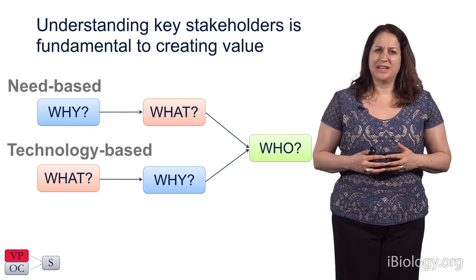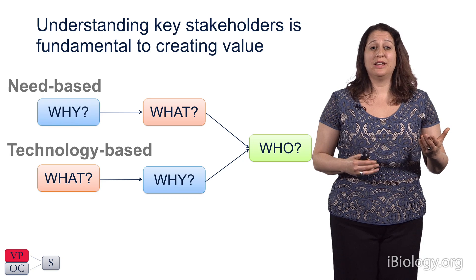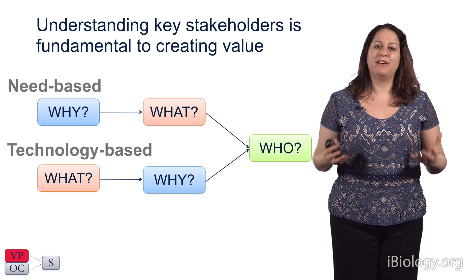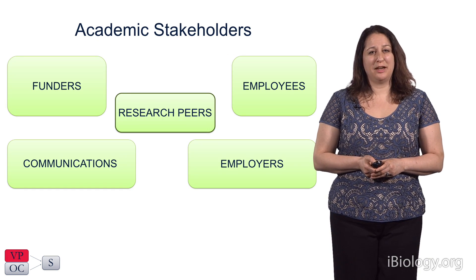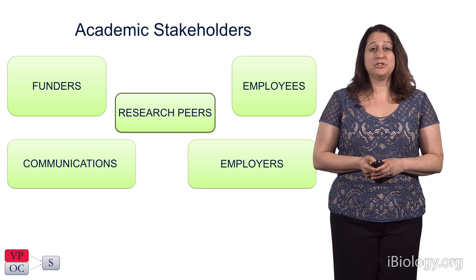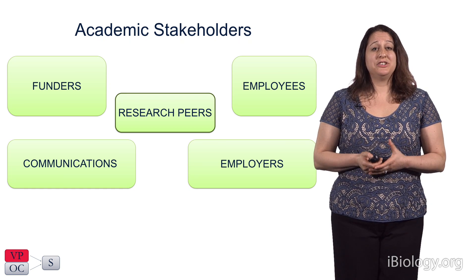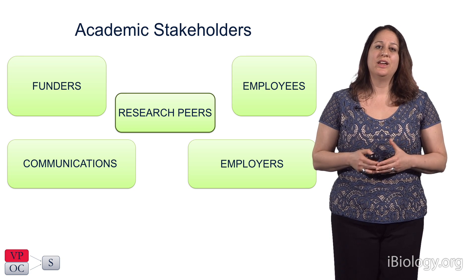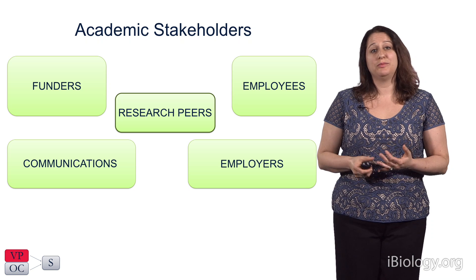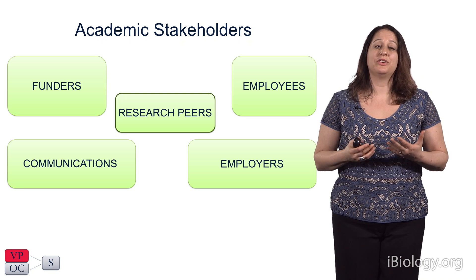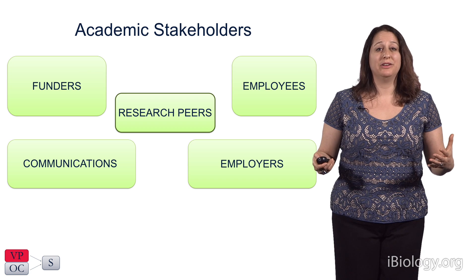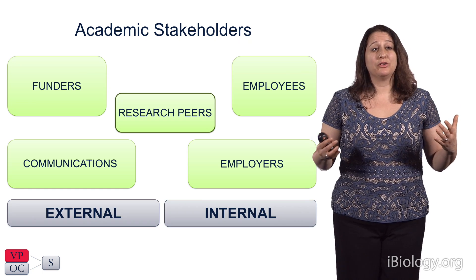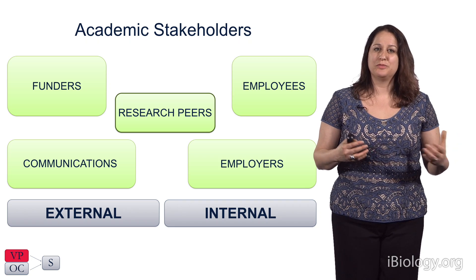As a thought exercise, take a few moments to think about stakeholders in a lab or biotech setting that have a vested interest in the outcome of an enterprise. For an academic lab, stakeholders range from students in the lab, to peer researchers outside of the lab, all the way to granting agencies that fund the work. These stakeholders can be grouped by common interests — for instance, students, postdocs, and lab managers can all be grouped together as employees of the lab.